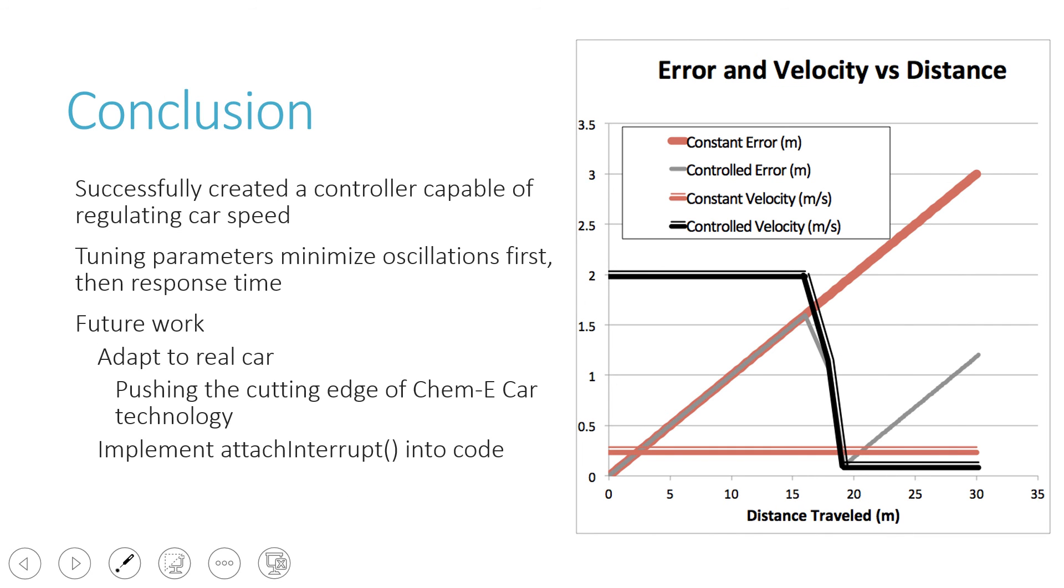In conclusion, we found that we were able to successfully control the speed of the car, which is awesome. It's a great step forward and frees us up to optimize the speed. I ran an optimization function in Excel to figure out what the best velocities would be through the duration of the race. The black and gray lines are the result of that, whereas the red ones are what everyone else has been doing since the chemical competition started.